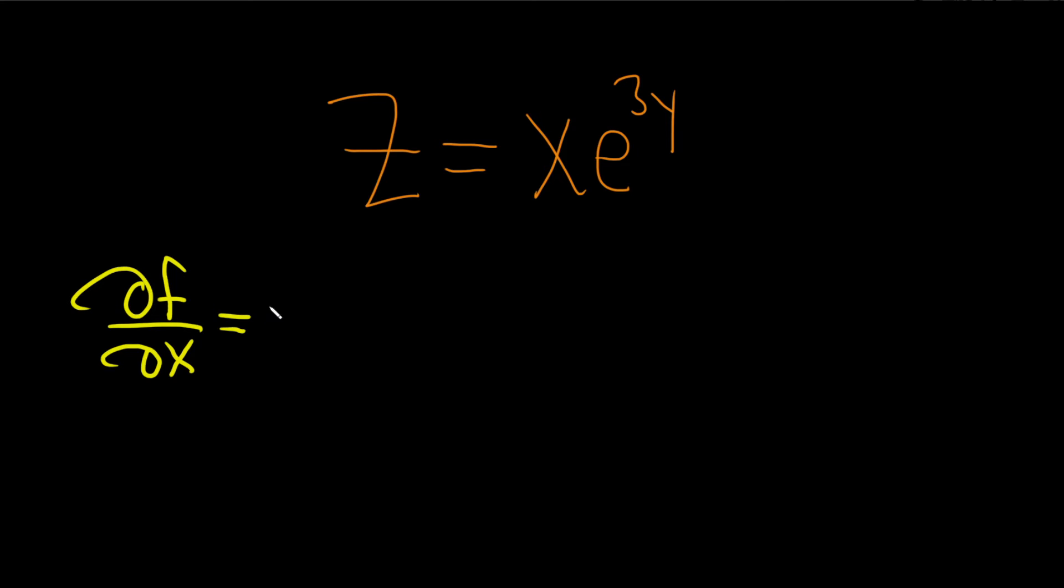So the derivative of x is 1, and then this constant piece just hangs out. So we just get e to the 3y, and that would be the answer. That would be the partial with respect to x.